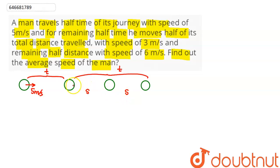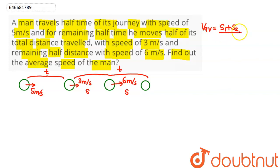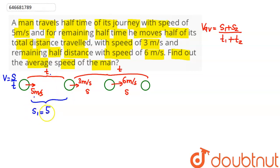He moves with a speed of 3 meters per second for one half distance S, and 6 meters per second for the other half distance S. We need to find the average speed. By definition, average speed equals total distance covered divided by total time taken. Since speed equals distance divided by time, distance S1 equals 5 times T, so S1 = 5T.